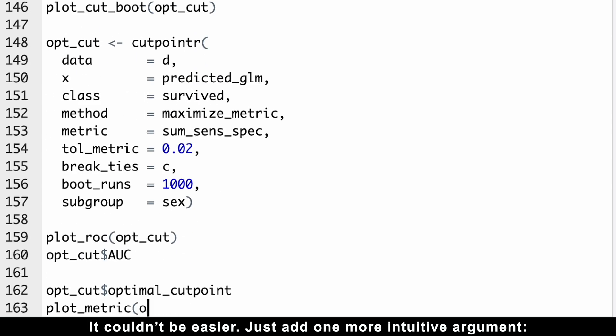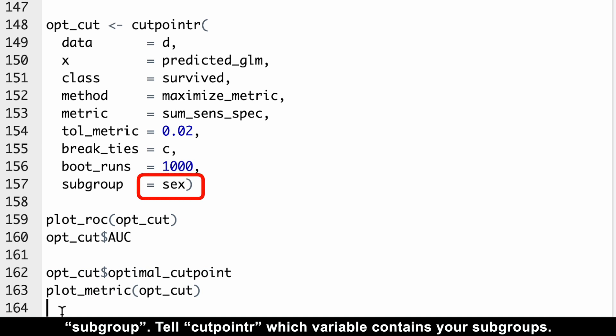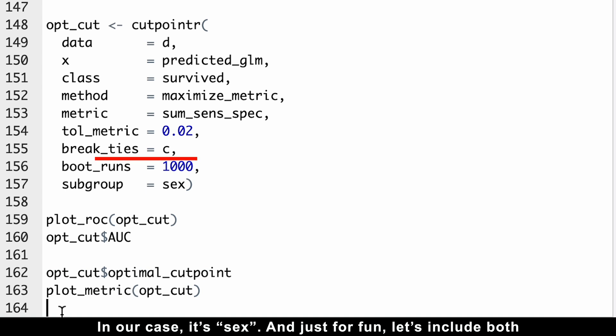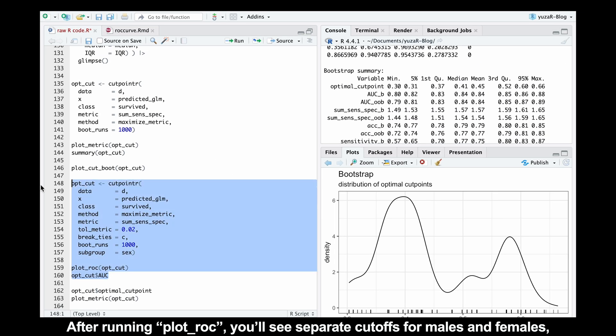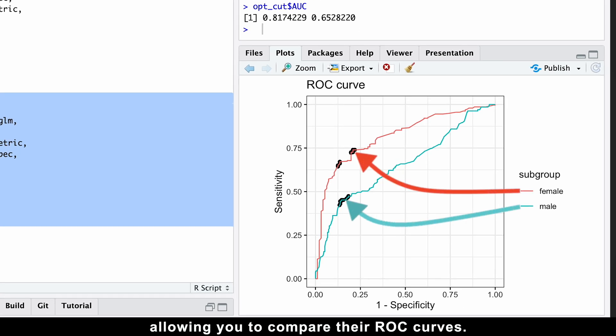It couldn't be easier. Just add one more intuitive argument, subgroup. Tell cutpointr which variable contains your subgroups. In our case, it's sex. And just for fun, let's include both horizontal and perpendicular uncertainties. After running plot ROC, you'll see separate cutoffs for males and females, allowing you to compare their ROC curves.